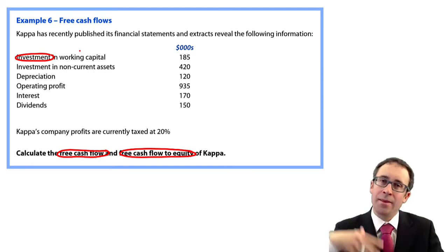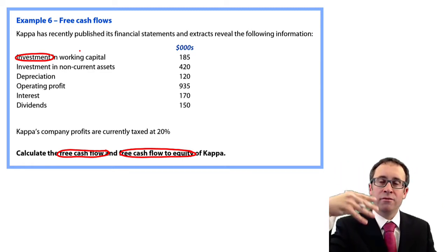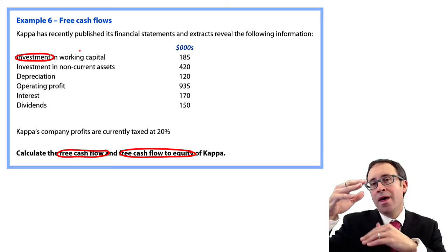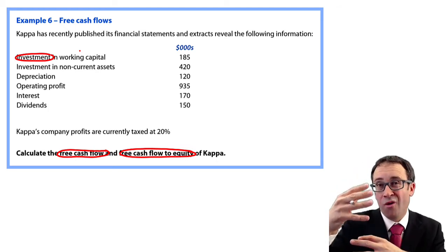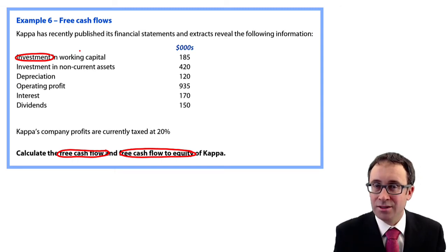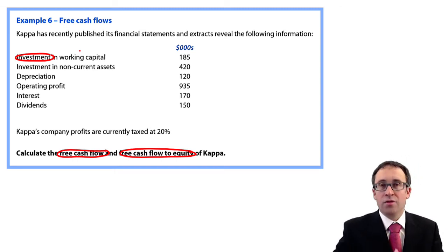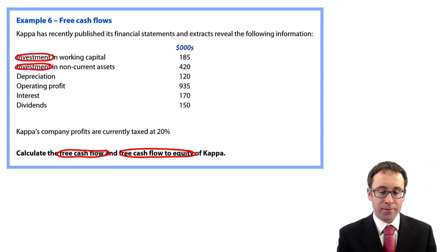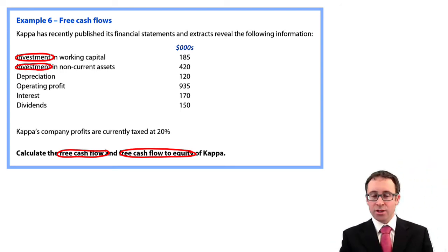So that's the outflow net of any inflow from selling your non-current assets. So effectively, all we're doing is we're taking the operating activities from your cash flow statements, ignoring any interest payments, and then also adjusting for the investing activities. You've got an investment again in non-current assets, so therefore, again, that will be an outflow.